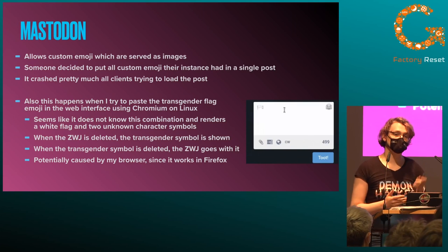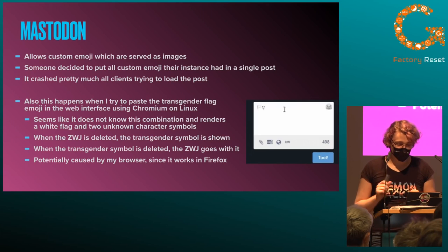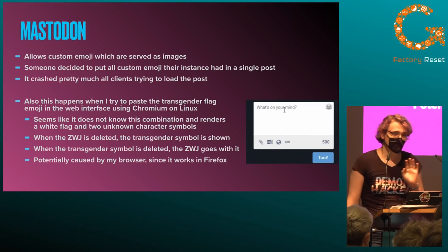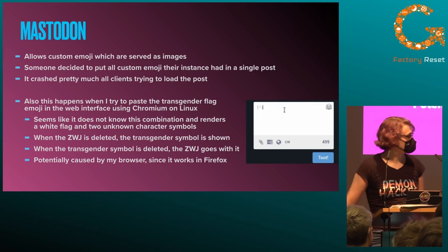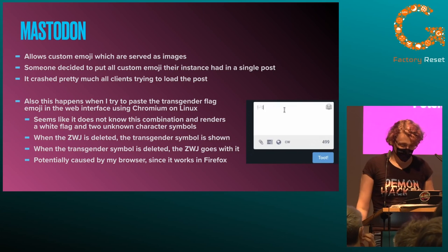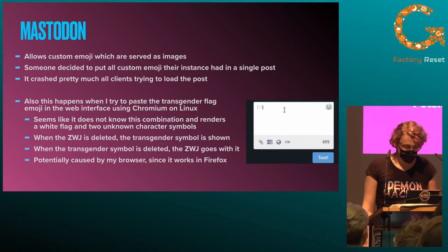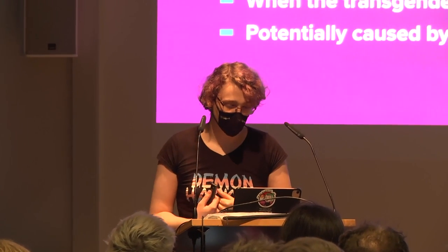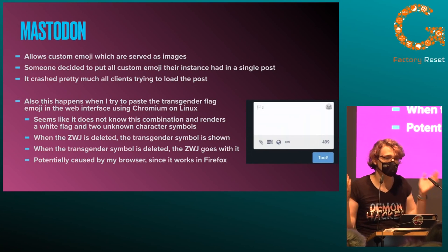On Mastodon, which also allows custom emoji — a text shortcode that loads a little image file — someone decided to put all the custom emoji their instance had in a single post. That post managed to crash basically every client trying to render it, mine included. I couldn't use the network for two days because it kept trying to render this post. There's also a little bug: when I try to paste the transgender flag on Chromium on Linux and Firefox it works, but in Chromium it doesn't. It doesn't know this combination and renders the white flag as unknown character symbols. When the zero-width joiner is deleted, the transgender symbol is shown — just an interesting way to handle combinations they don't know.